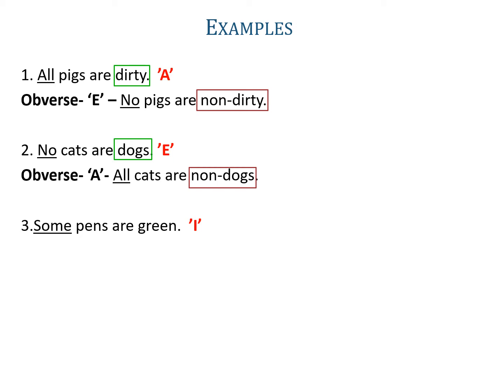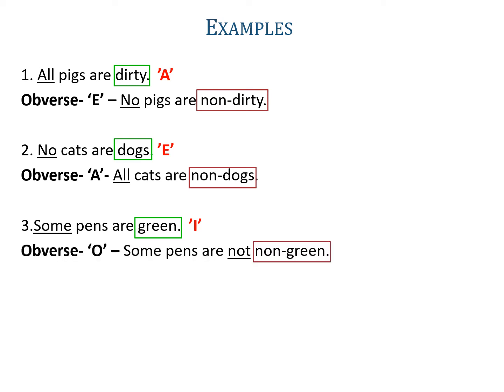Example three: 'Some pens are green.' The word some is used, so it is an I-proposition. Its obverse will be O, because both have the same quantity but different quality — I is affirmative whereas O is negative. The predicate is green, its complementary will be non-green, and the symbolic form of O is 'some S is not non-P'. So the obverse is 'some pens are not non-green'.